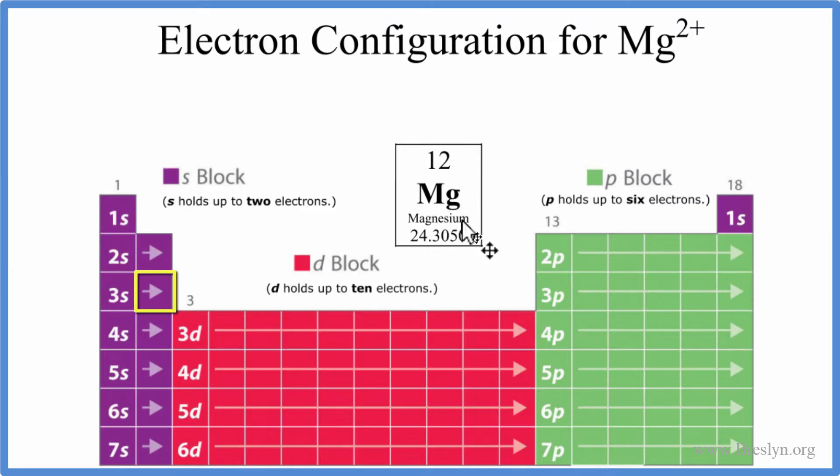When we have a neutral element, like all the elements on the periodic table, this is the atomic number. It equals the number of protons. Because it's neutral, the number of protons will equal the number of electrons. We have 12 electrons for Mg.